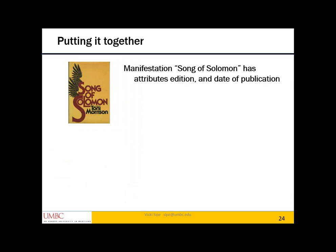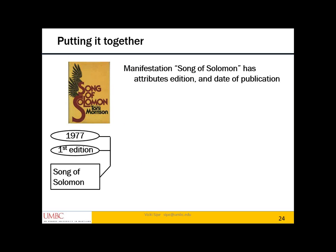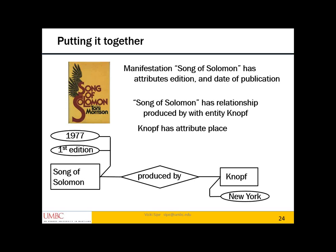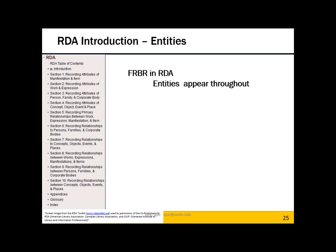So that in a nutshell is the FRBR model. The relationship between our Song of Solomon manifestation and Knopf and some of the attributes can be represented by a diagram. The Group One entity Manifestation — Song of Solomon — has attributes of edition and publication date. Song of Solomon has the relationship 'is produced by' with Group Two entity Knopf, and Knopf has attribute Place: New York. This is all tied together in an entity relationship model. One of the reasons why it's important to understand at least the fundamentals of this is that RDA is organized around this model — we can see entities, relationships, and attributes throughout RDA.